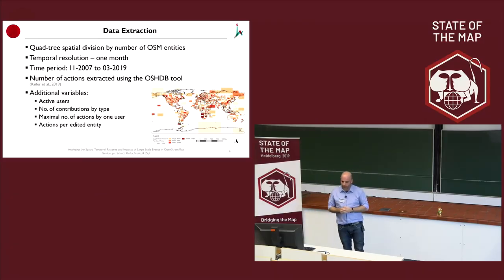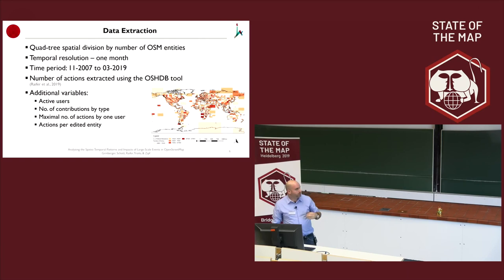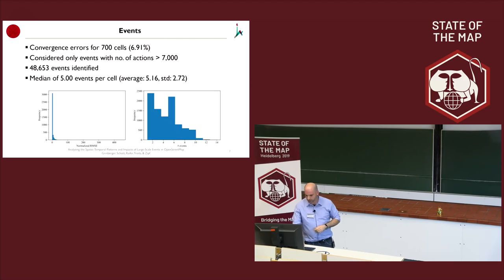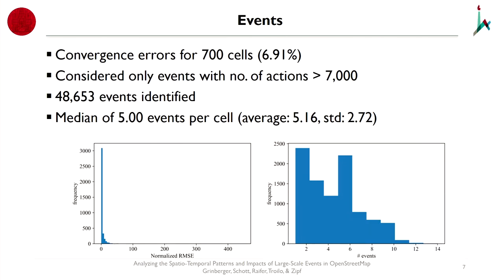Additional variables extracted include number of active users, number of contributions by type, the maximal number of actions by one user, and actions per edited entity. Out of more than 10,000 cells, 700 showed convergence error and were excluded. We considered only events with more than 7,000 actions, resulting in 48,000 distinct events. Events may also span more than one month, so they are also separated temporally.